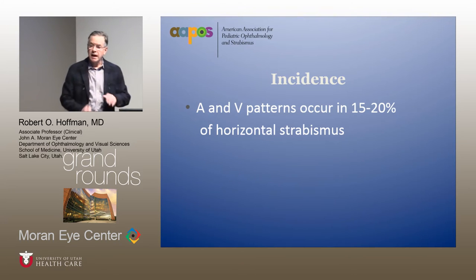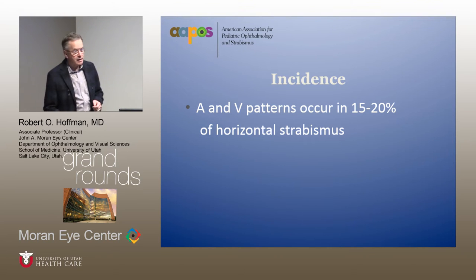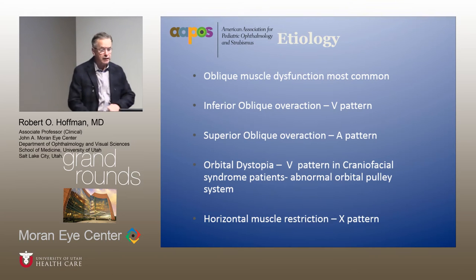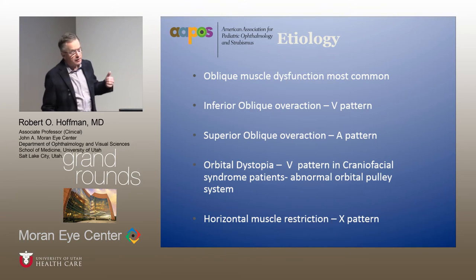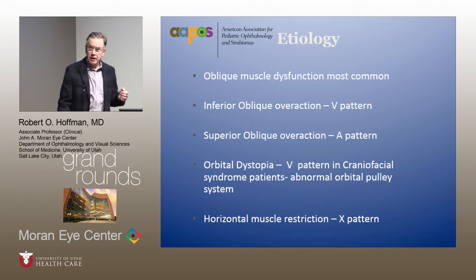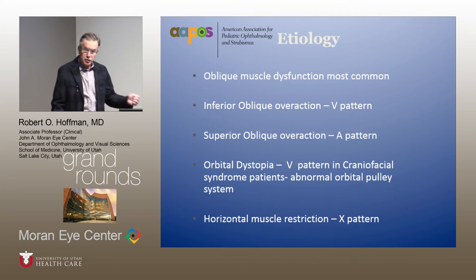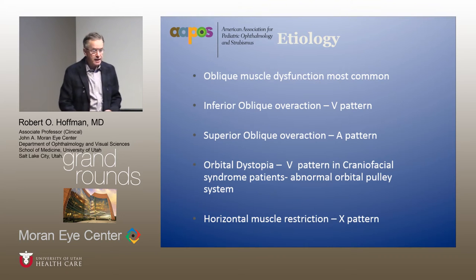The incidence: if you look at horizontal strabismus across the board, about 15% to 20% will have an A or a V pattern — certainly the most common players. What do we know about etiology? Oblique muscle dysfunction is the most common cause. Inferior oblique overaction is associated with V patterns; superior oblique overaction with A patterns. Definitely worth remembering — it helps you tie things together.